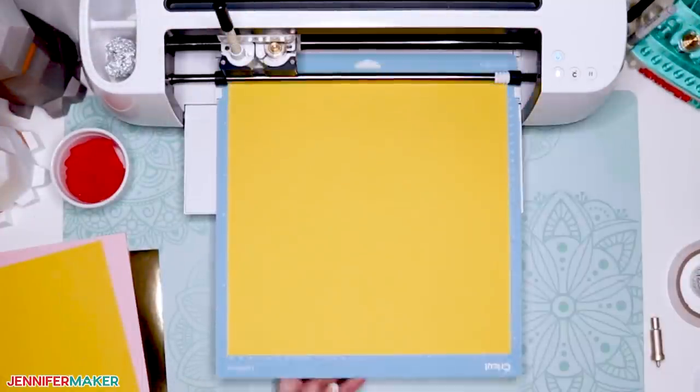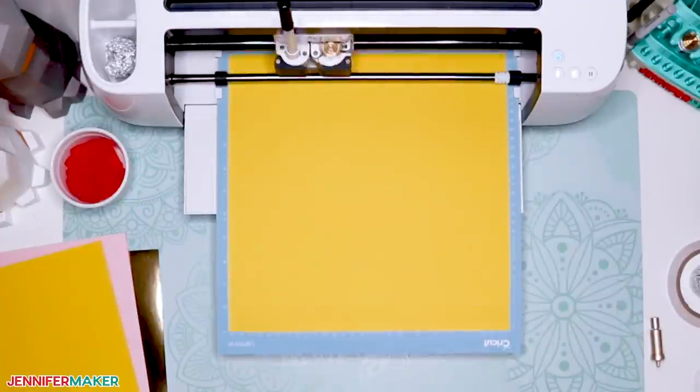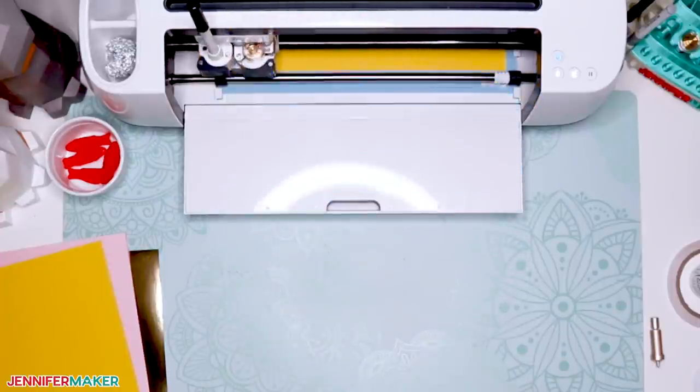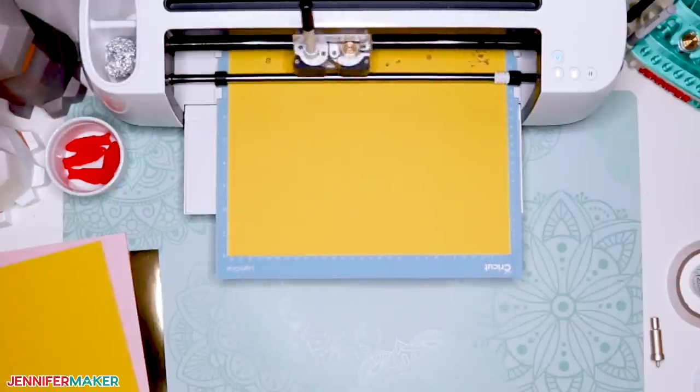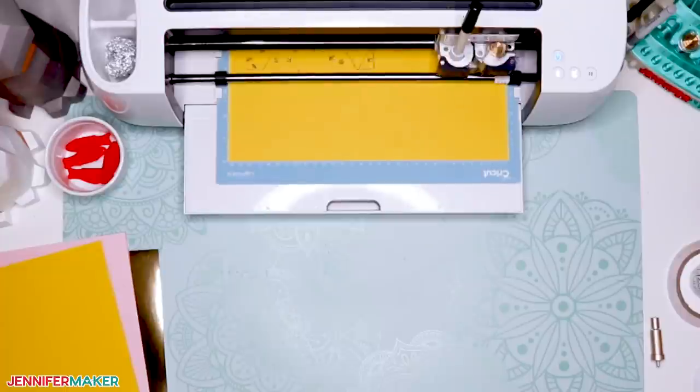All right, so load your machine mat into your Cricut and then press the flashing button to begin scoring. Your machine will first score, then draw and finally cut. And you'll be prompted on screen when to change your tools. So keep an eye on your screen as you're working.